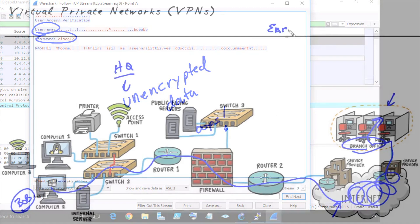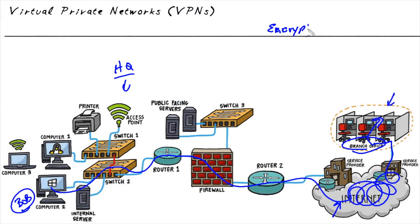One solution we can use is encryption. Encryption is the concept of scrambling data in such a fashion that if anybody gets hold of it without the right keys to decrypt it, it's just a bunch of gobbledygook. So an attacker or eavesdropper on the internet — if the traffic is encrypted — can't make sense of it, and it's of no value to them.